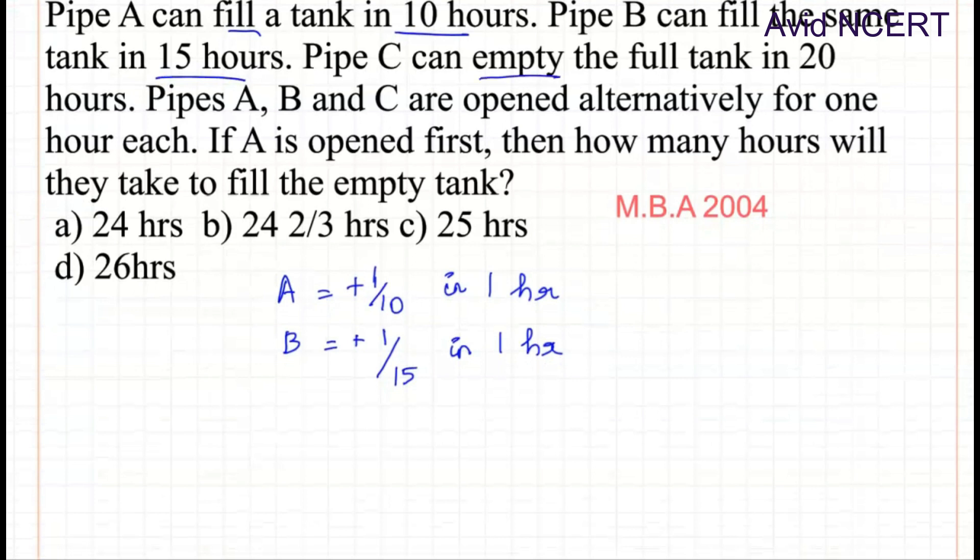Next sentence, Pipe C can empty the full tank in 20 hours. So since it's emptying, it is minus. In 1 hour, it can empty 1/20 of a tank.